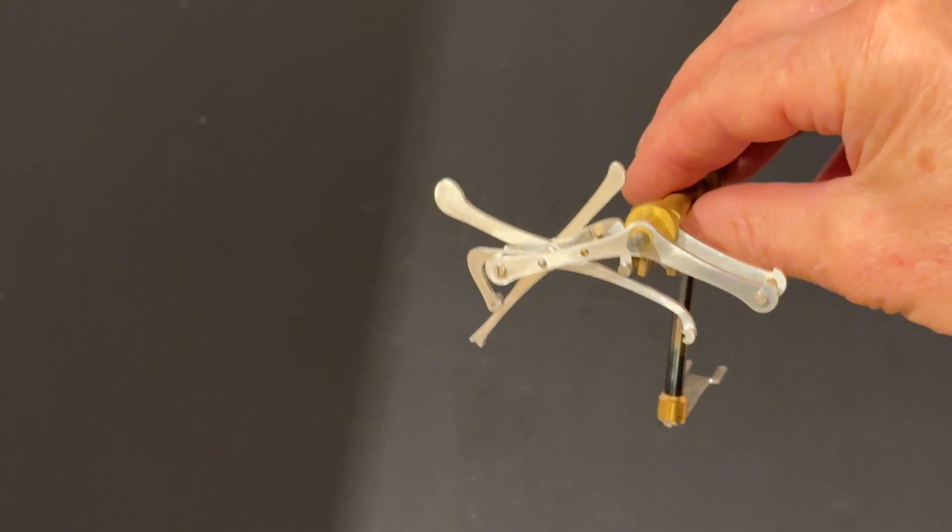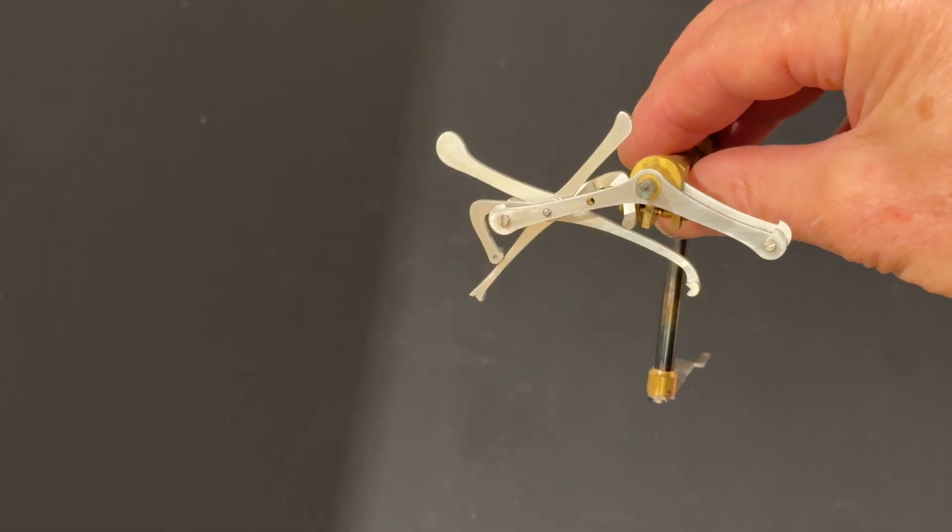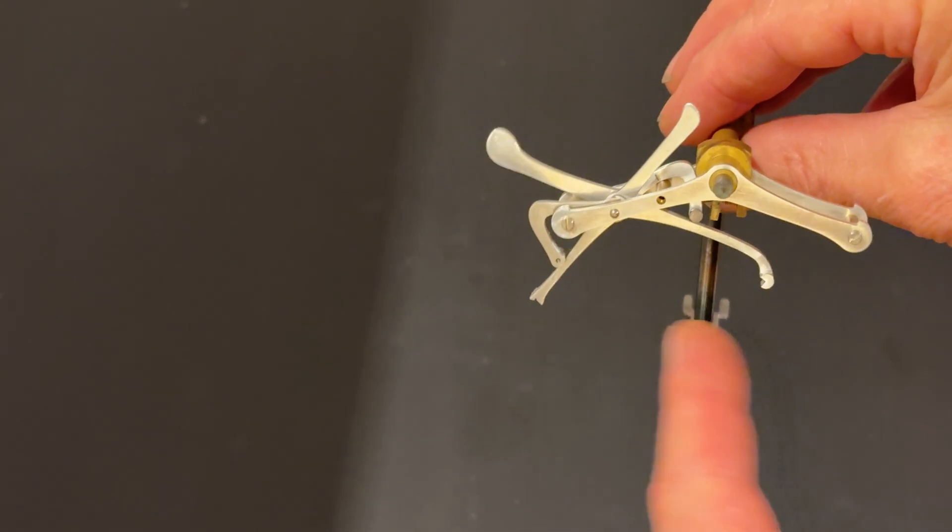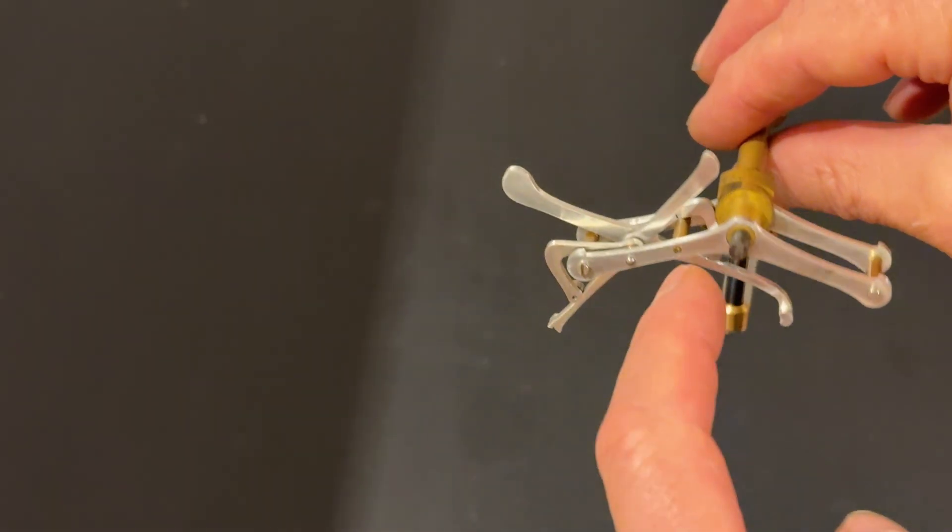So here we've got the single pivot grasshopper escapement, we've got the entry pallet, the exit pallet and the composer here and here.